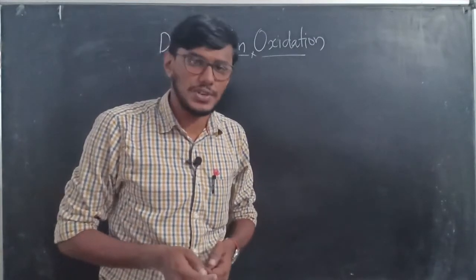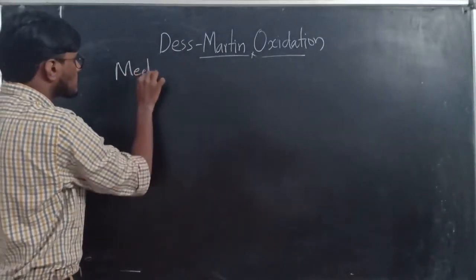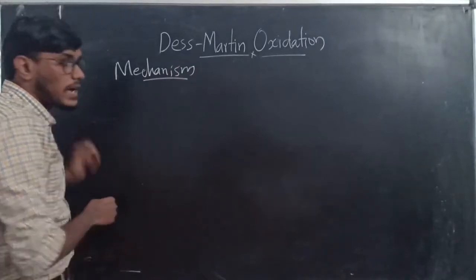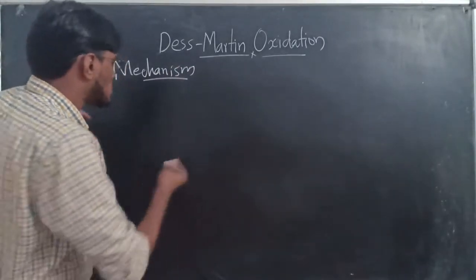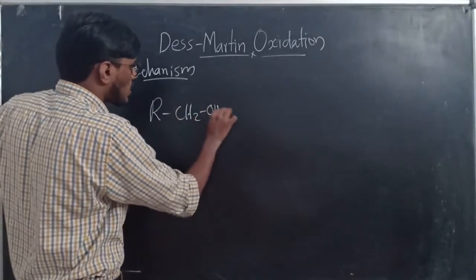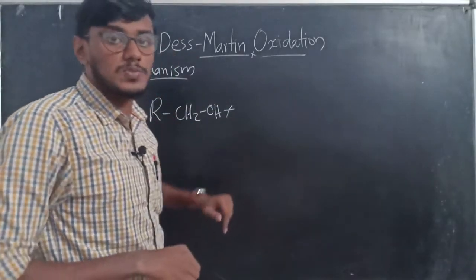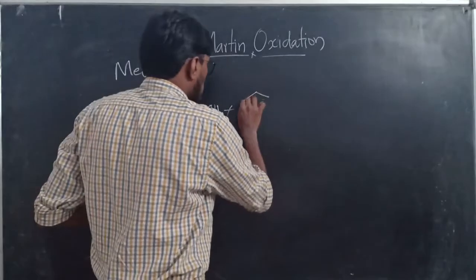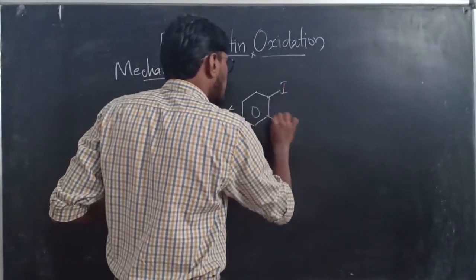Next, what is the mechanism of Dess-Martin oxidation reaction? First, we know that an alcohol is oxidized to a carbonyl compound. An alcohol — RCH₂OH — is used here, plus the reagent Dess-Martin periodinane.